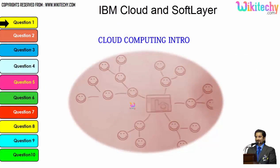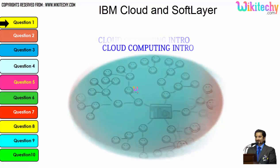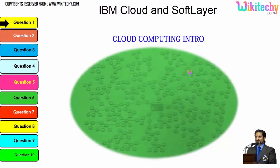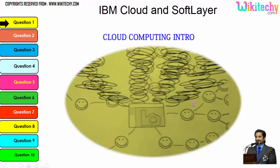Let's talk about the cloud computing intro. Here is a computer connected to a server, and this server is monitoring the computer. Once the network becomes bigger, the monitoring becomes tougher. If more computers are added, the network grows larger and the monitoring system becomes really slow. There is also a possibility that the network crashes or the server couldn't monitor specific networks.